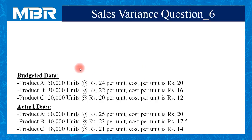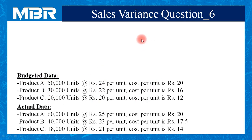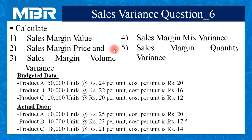On your screen, information related to budgeted data for products A, B and C, and actual data for products A, B and C is given. In this information we have units of sales, sale price per unit and cost per unit for budgeted data and actual data. We need to calculate sales margin variance, sales margin price variance, sales margin volume variance, sales margin mix variance, and sales margin quantity or sub-volume variance.